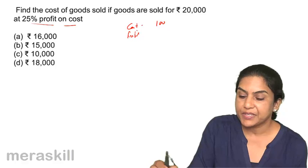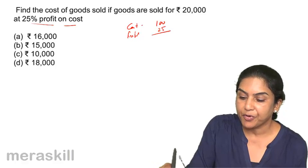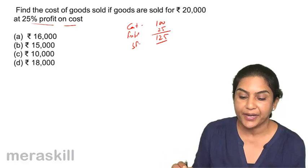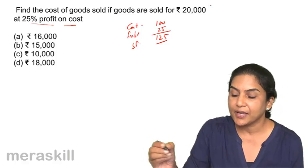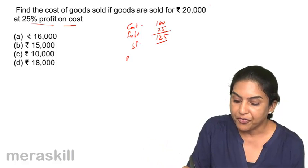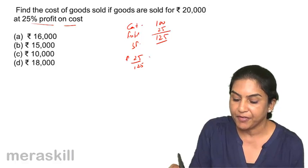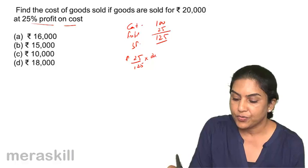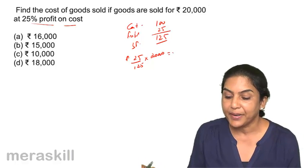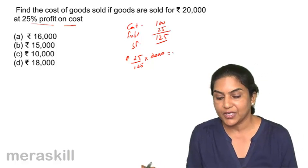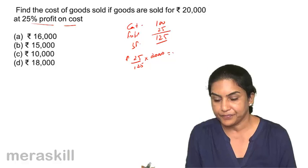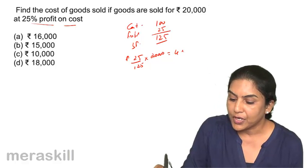25% on cost: cost is 100, profit is 25, therefore selling price is 125. Here the selling price is given to us. So profit by selling price — that's 25 by 125 of 20,000 — will give us the element of profit. That is one-fifth, which is 4,000. This is the profit.